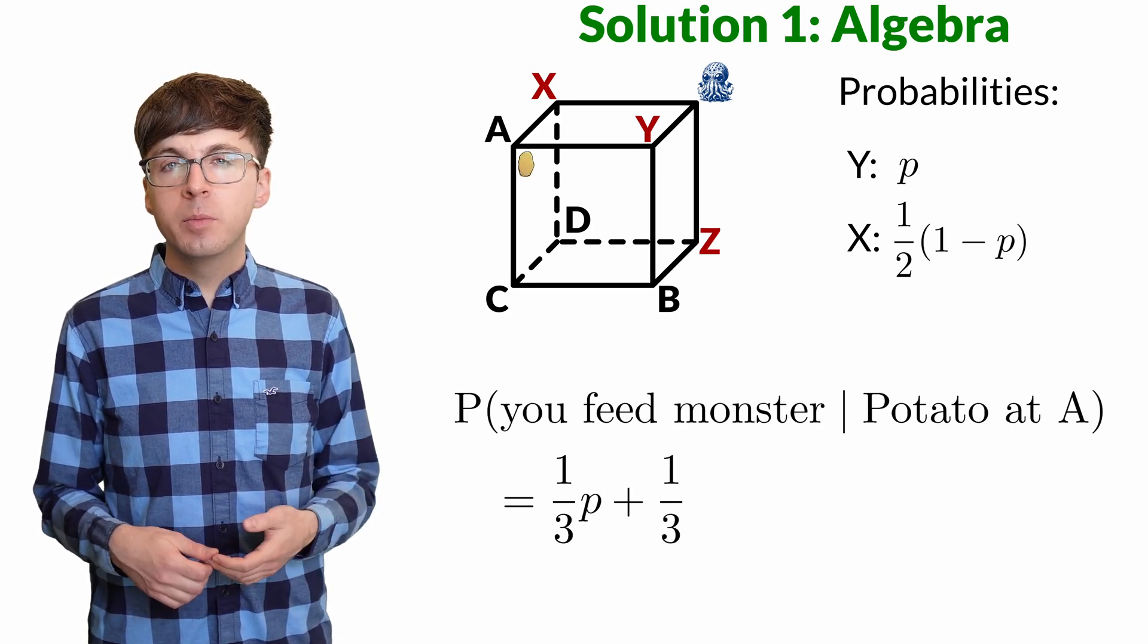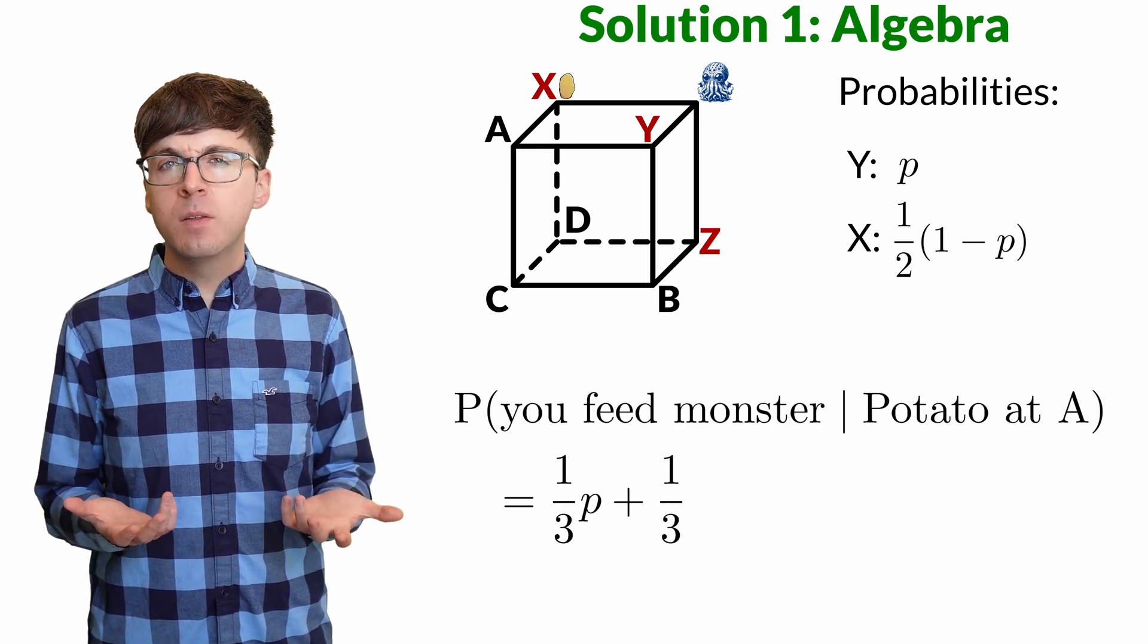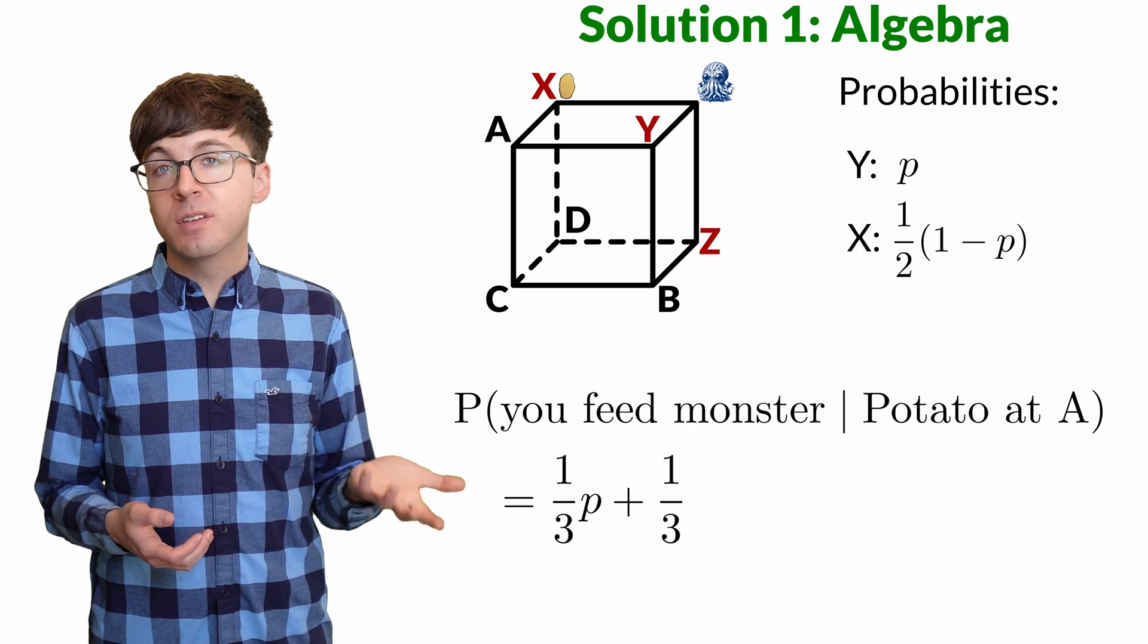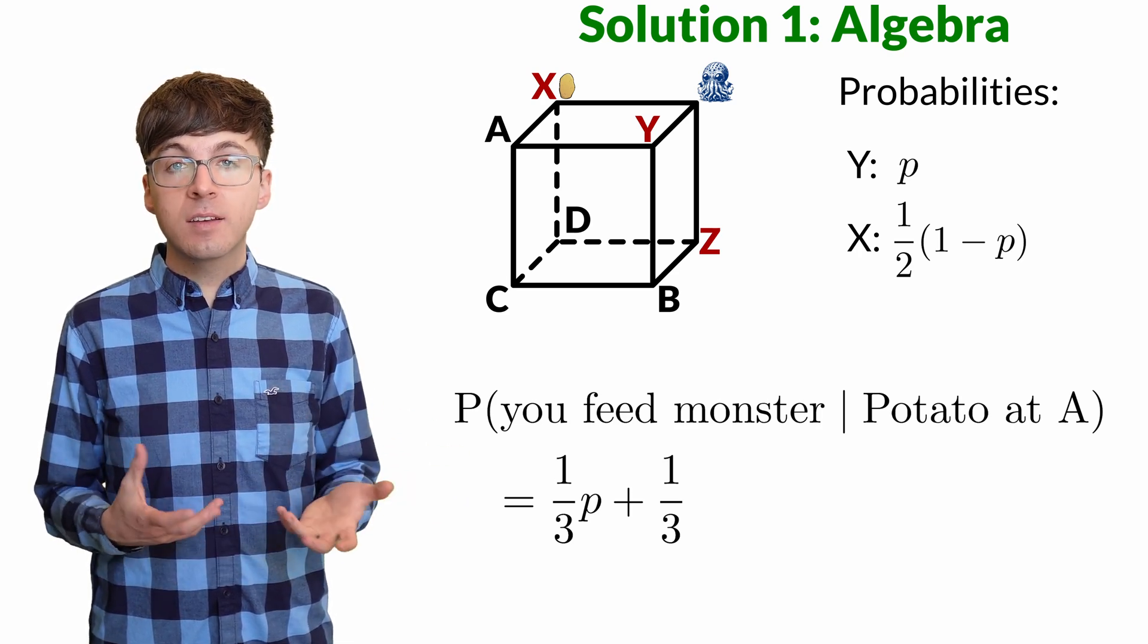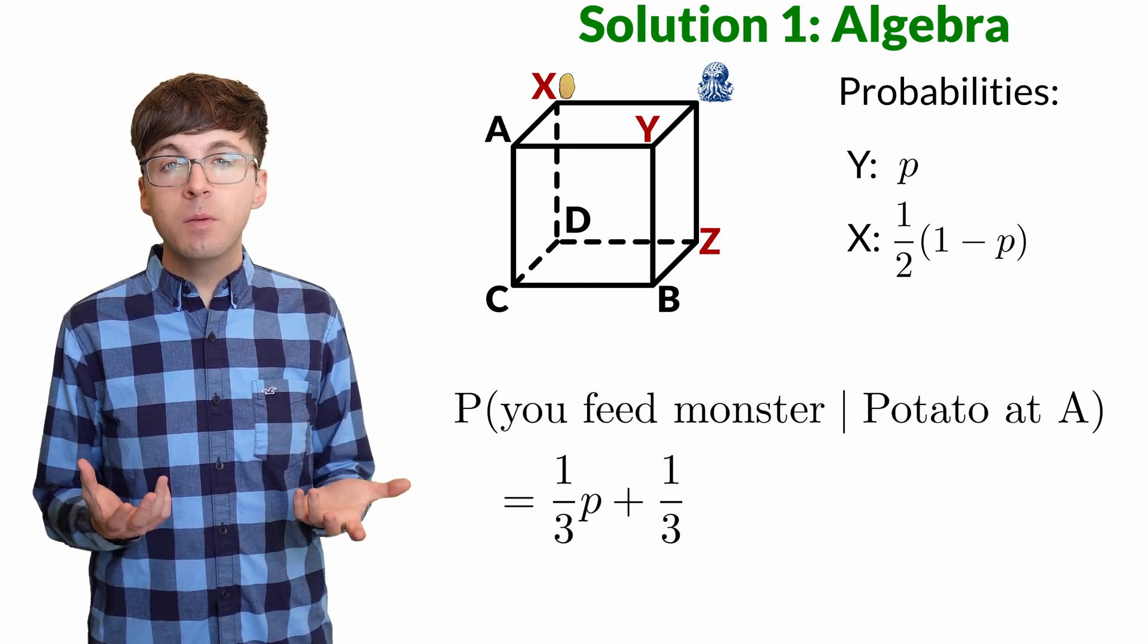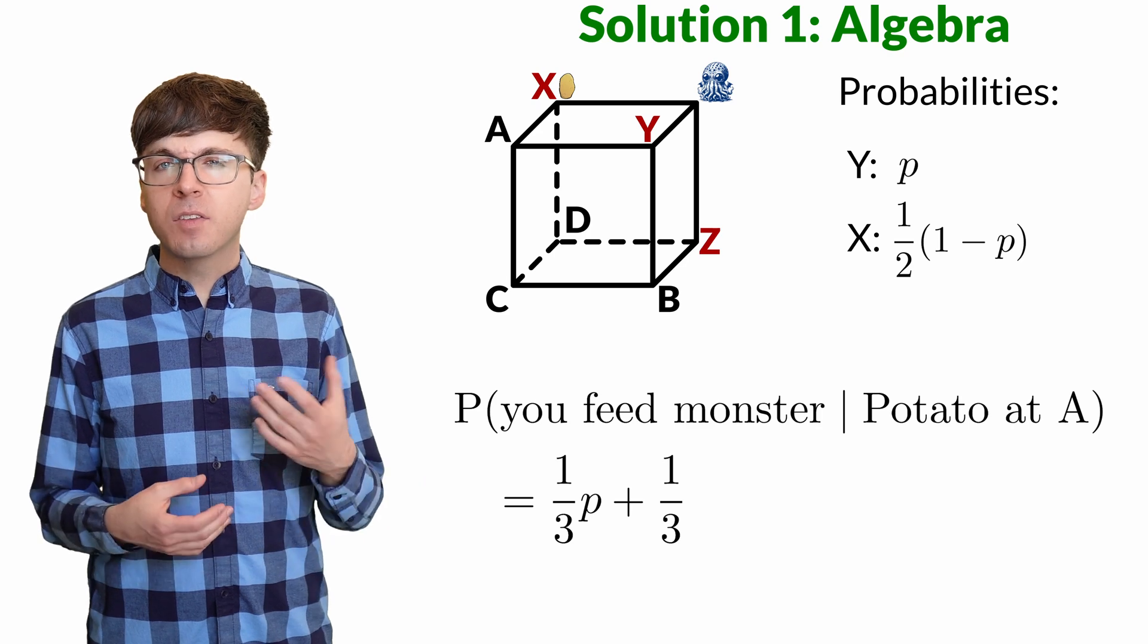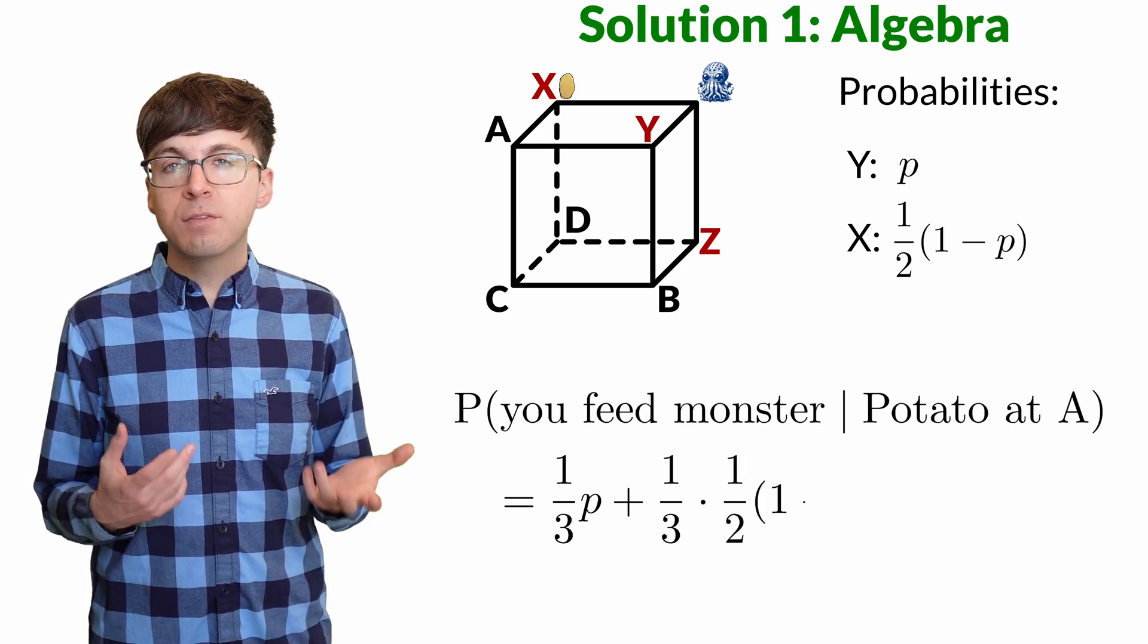Then there's a one-third probability the potato goes from a to x. What's the probability we feed the monster given that the potato is at x? This is just like the beginning of the game, except that x has the potato now instead of us. So the probability we feed the monster is the same as the probability that x had at the beginning of the game. That's one-half one minus p.